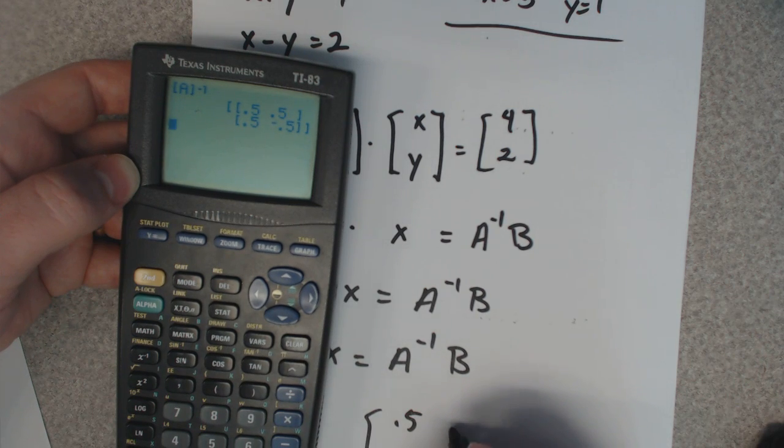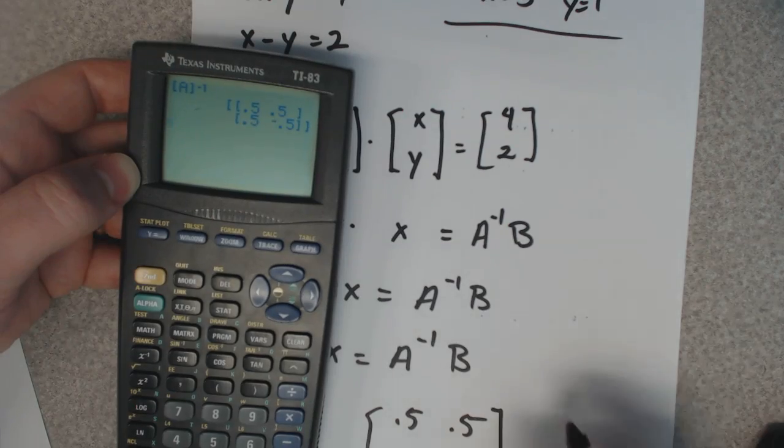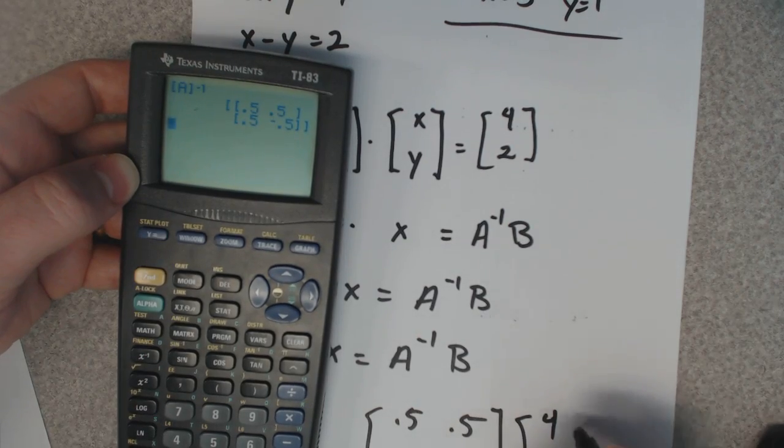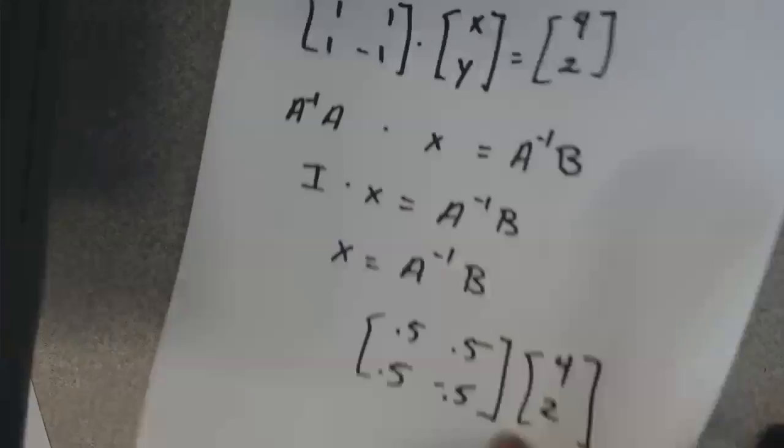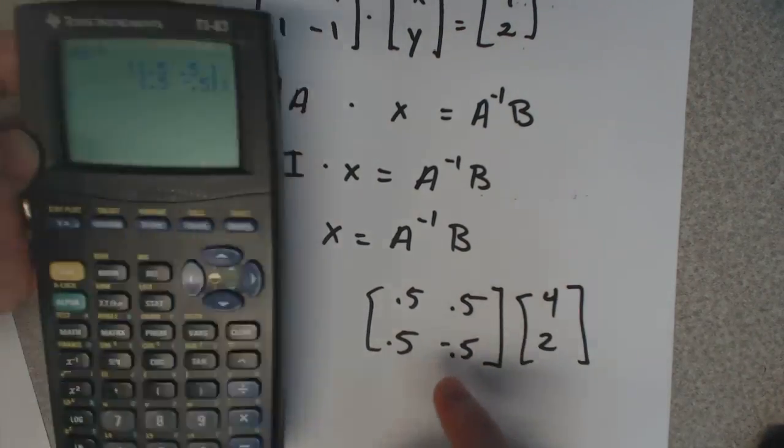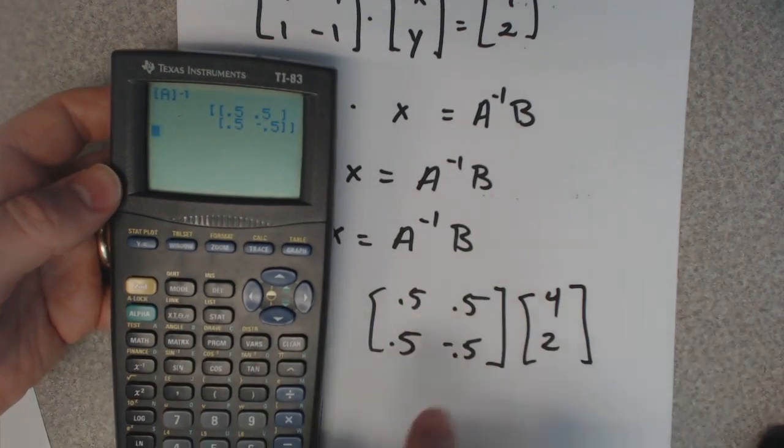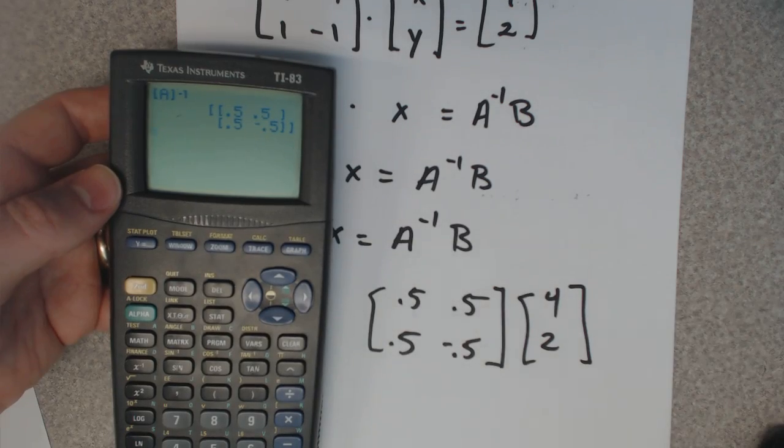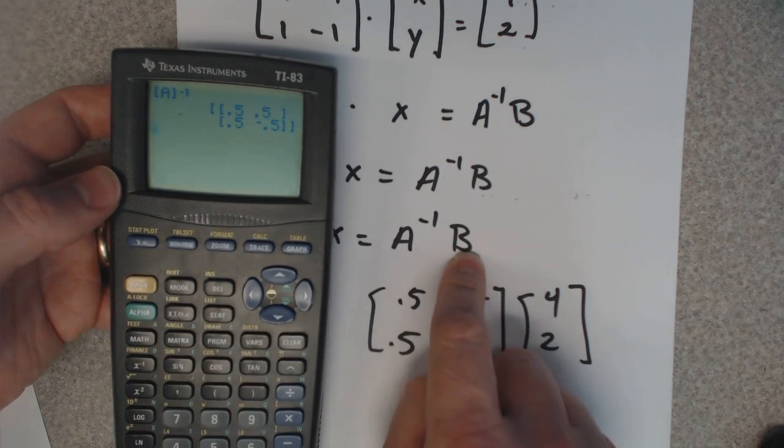0.5, 0.5, 0.5, negative 0.5. We want to multiply that by 4, 2, the answer matrix. Now you can do this too, you can multiply by hand if you want. I'm going to put this matrix in my calculator.